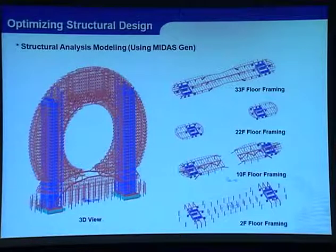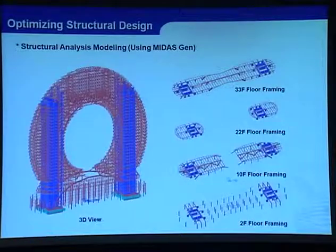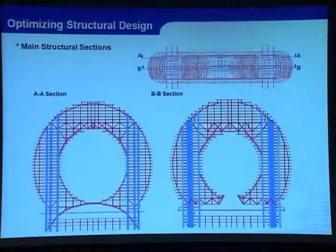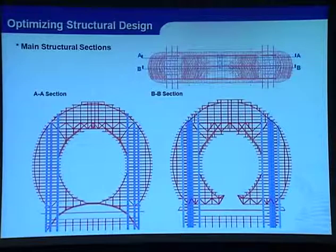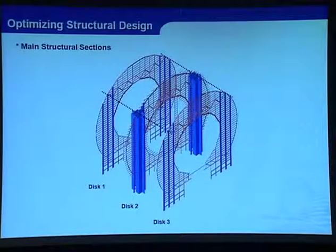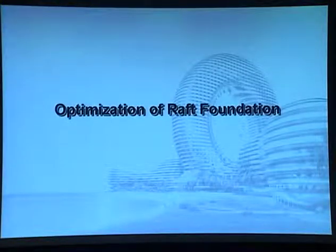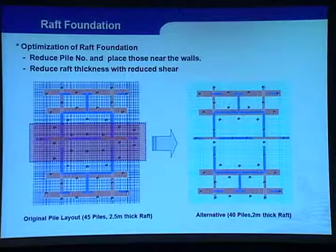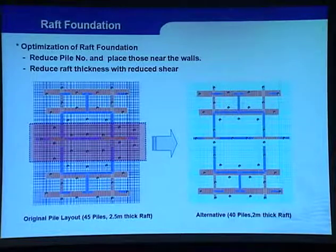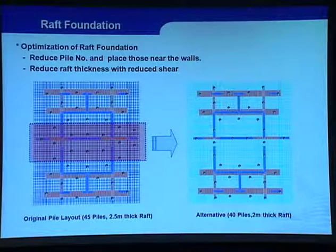For structural analysis modeling, we used Midas. You can see the concrete core walls and all other steel members in the model, as well as the internal disc section and external disc section, showing the core wall and outer disc. For foundation optimization, we reduced the building weight and the eccentric load, so the axial force and overturning moment at the base were significantly reduced. This allowed us to reduce the number of piles and, with a more rigid distribution of piles, reduce the raft thickness as well.